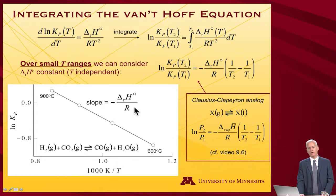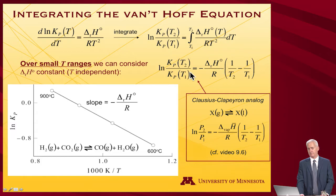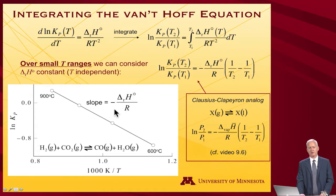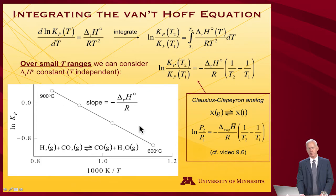The actual slope is going to be the prefactor: minus the enthalpy of reaction over R. So if it's not obvious that the plot should be linear, think about the fact that here's 1/T2 minus 1/T1 — a line is something varying as a constant times the variable minus a different value of the variable. This slope, minus ΔHrxn/R, is how you can determine the enthalpy of reaction by looking at the equilibrium constant: change the temperature, measure the partial pressures of the gases to compute the equilibrium constant, plot them as a function of temperature, do the best-fit line, and that gives you the enthalpy of reaction.